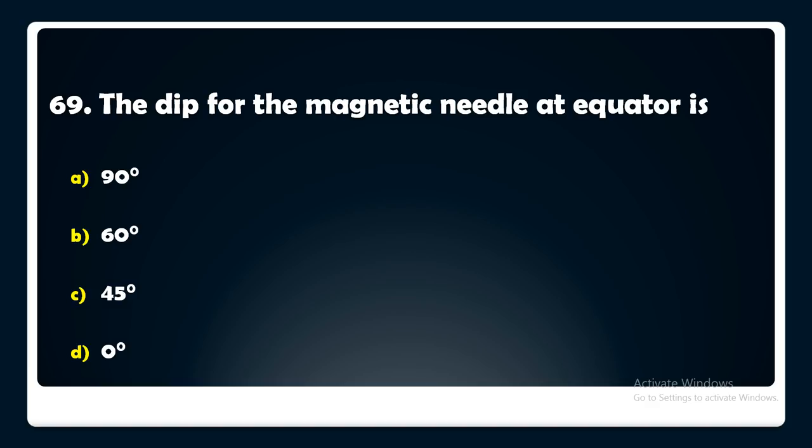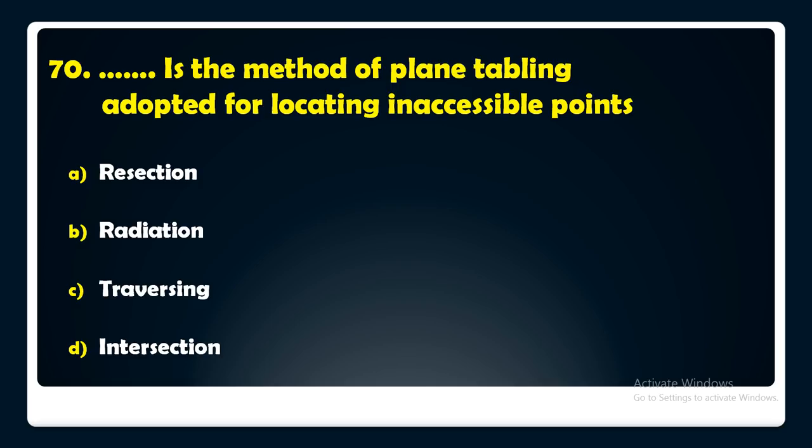Which method of plane tabling is adopted for locating inaccessible points — resection, radiation, traversing, or intersection? The answer is: the intersection method is used in plane tabling for locating inaccessible points.